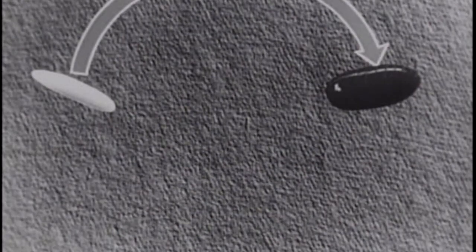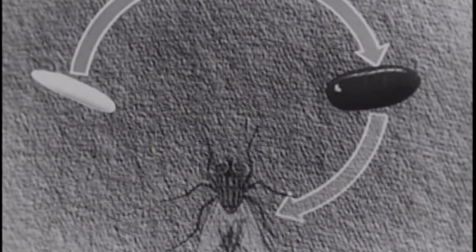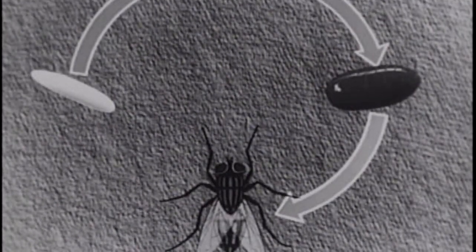Typical of most of the higher insects, the life cycle of the housefly starts with an egg, from which comes the maggot or larva. The larva forms a pupa similar to the chrysalis of a butterfly, and from the pupa emerges the adult fly.